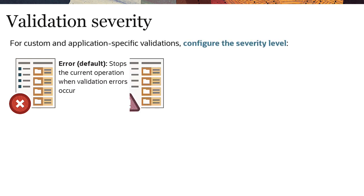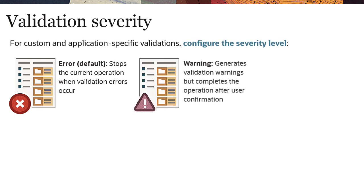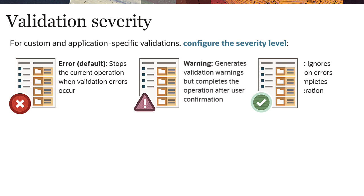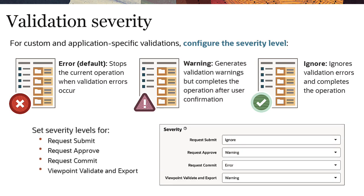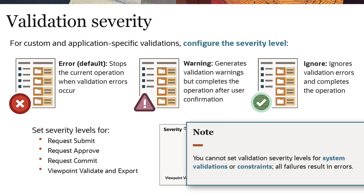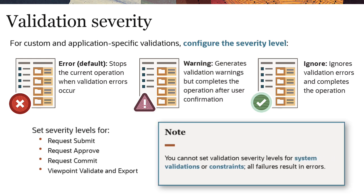you can configure the severity level to display a warning or ignore the validation during all data governance stages and viewpoint validation and export. You cannot set validation severity levels for system validations or constraints — all failures result in errors.